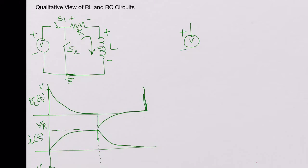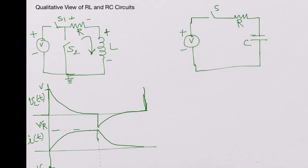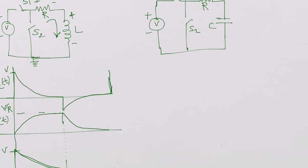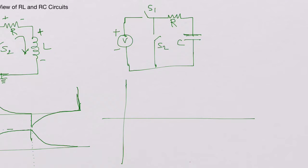Now let's look at the RC circuit. We have the same setup with a DC voltage source of value V and switches S1 and S2, where S2 shorts the circuit to ground. At time t equals zero the capacitor acts like a short for high-frequency changes, so the current I(t) flowing in the circuit starts at V over R.